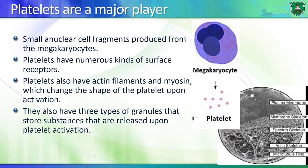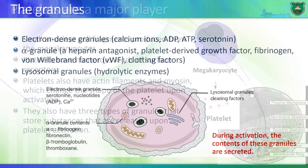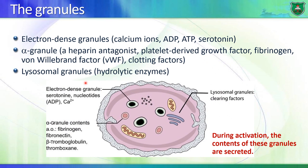What are platelets? Platelets are small anuclear cell fragments produced from large cells known as megakaryocytes. Inside platelets you have cellular components: the plasma membrane, the actin cytoskeleton, vesicles, proteins, and signaling factors. Inside these platelets there are granules or vesicles - three types. You have electron dense vesicles, which contain calcium ions, ADP, ATP, and serotonin.